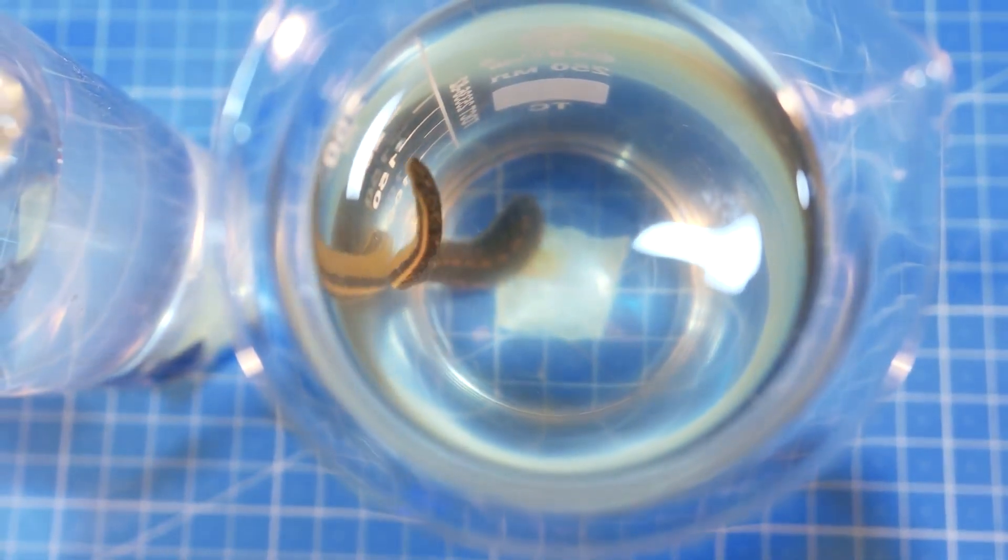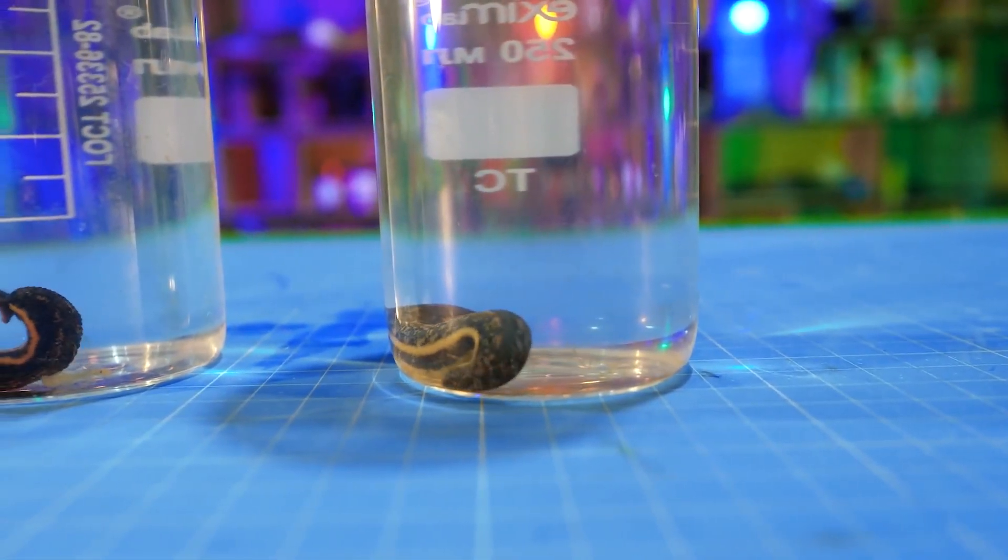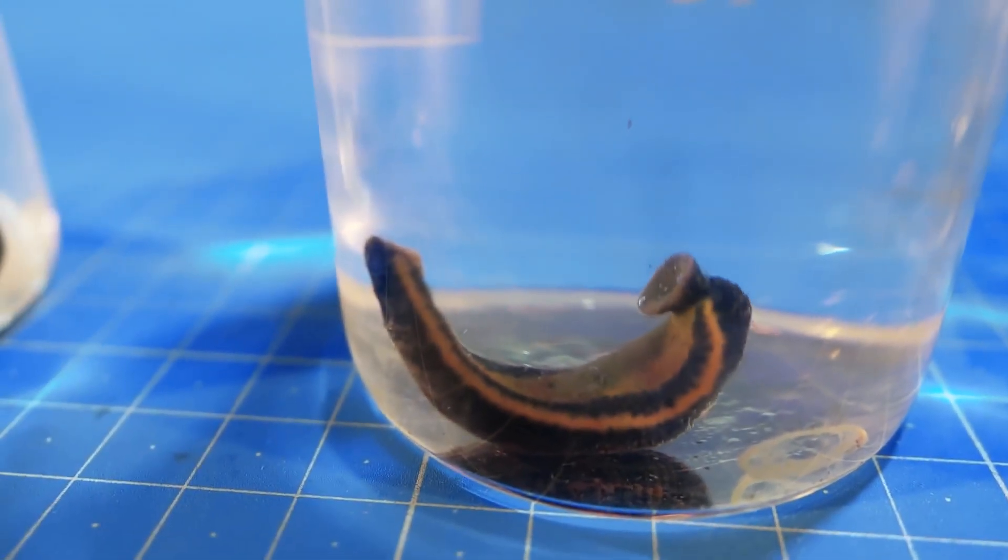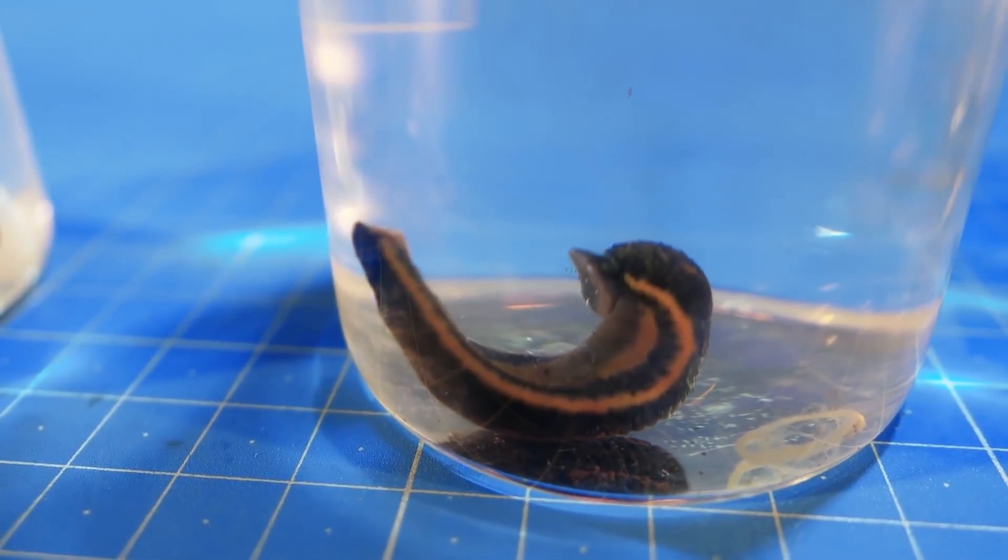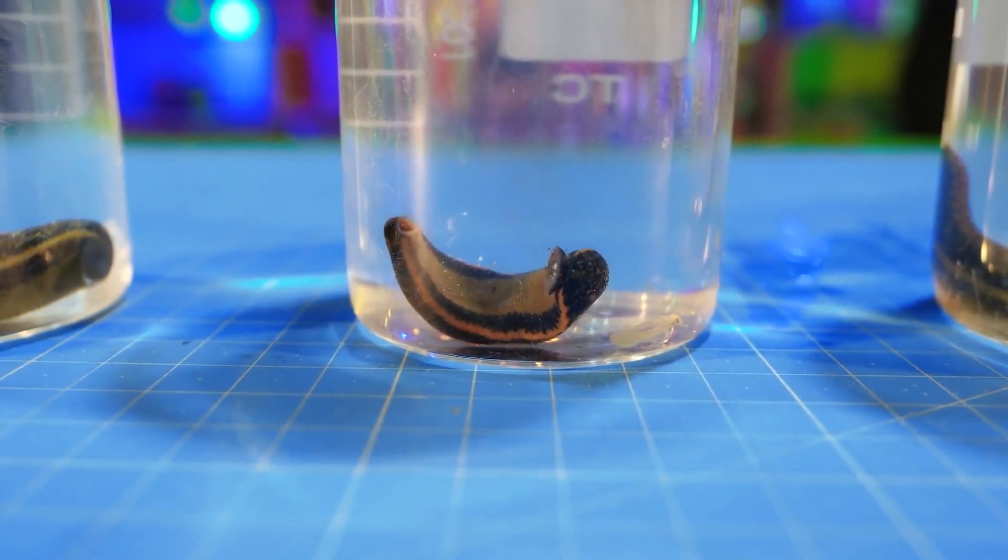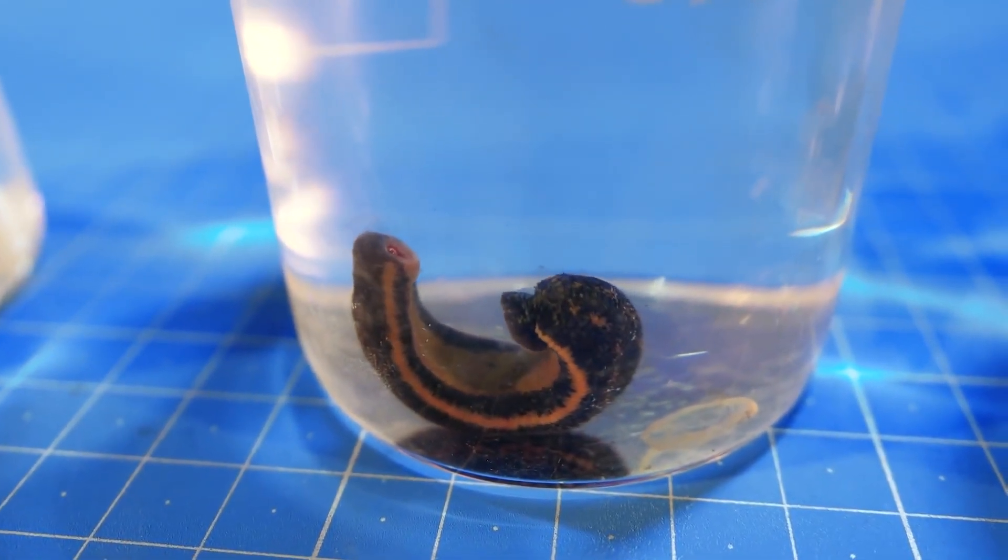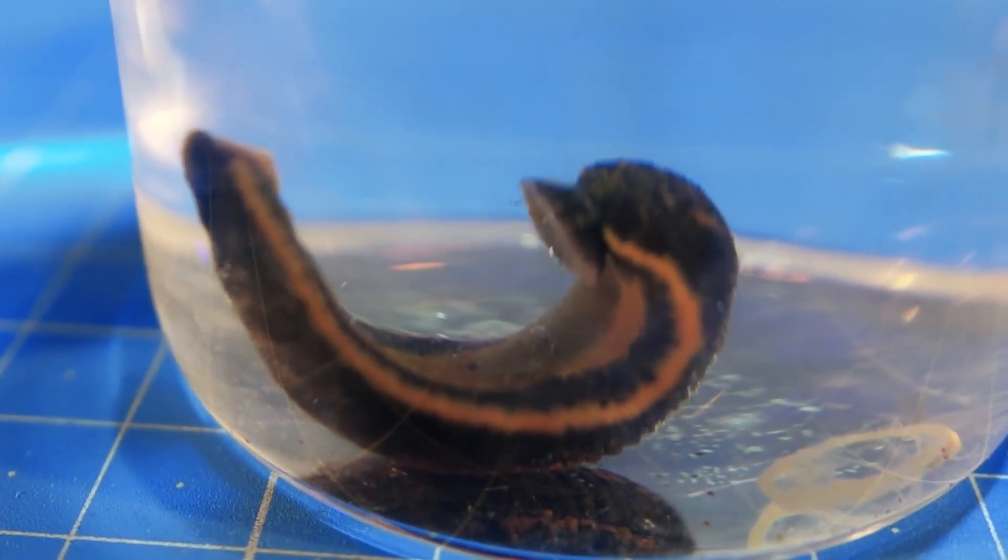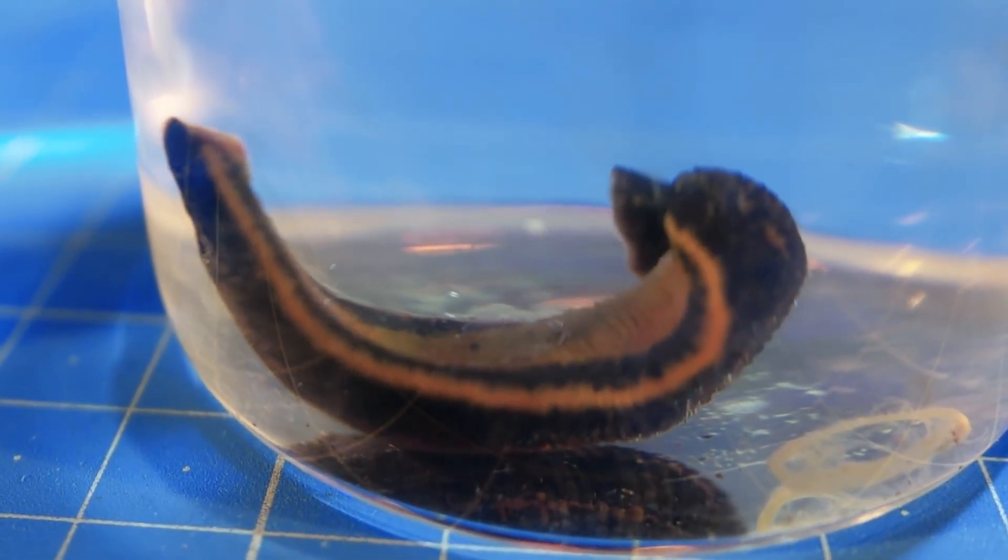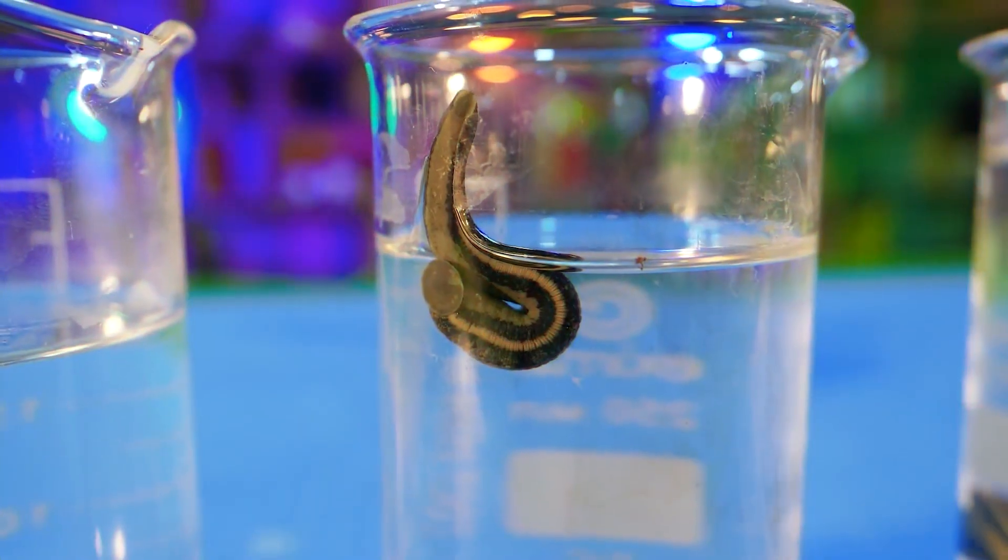But the one that drank the blood of a drunkard so gladly became restless, began to fidget and wriggle. On the other hand, a leech that has drunk the blood of a person who uses narcotics will experience some convulsions. She even has bubbles of gas coming out of her mouth.